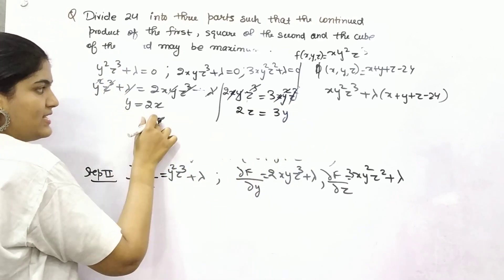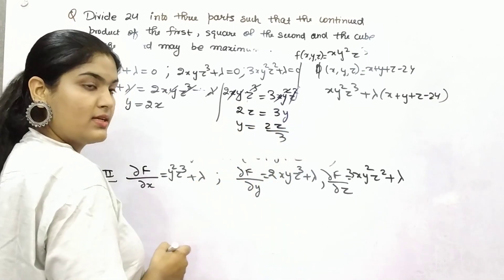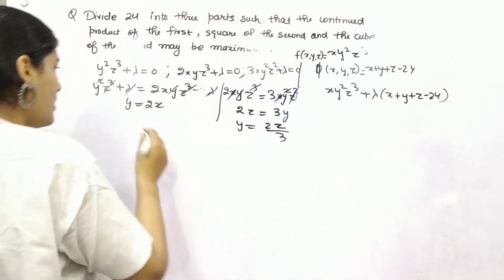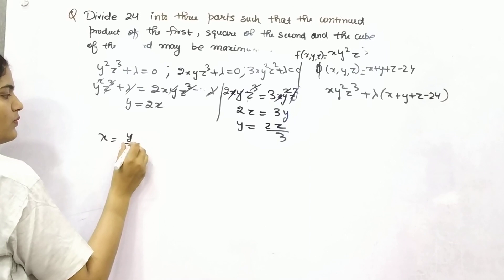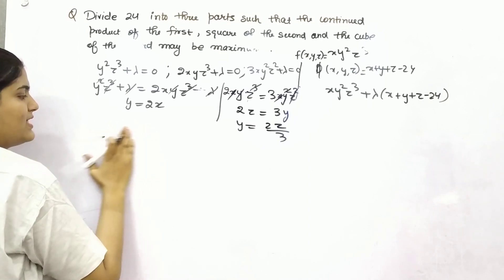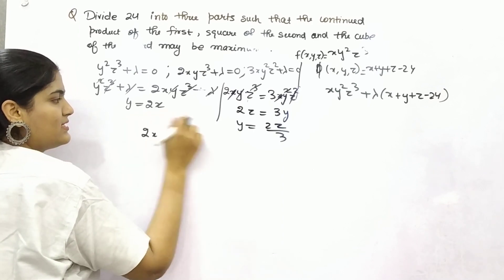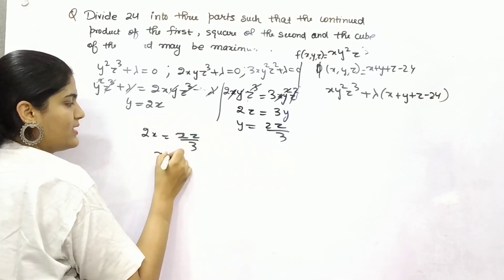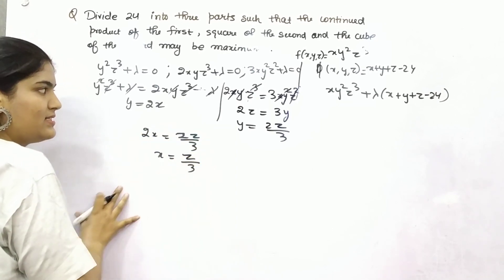So from here, y is 2x. From here, y is 2z by 3. Now what you can do? From here, x is y by 2. Or else, what you can do? Simply put y is this, y is this. So 2x will be 2z by 3. So x is z by 3.